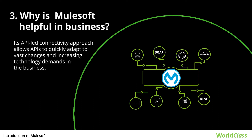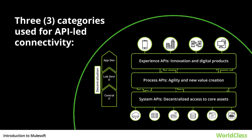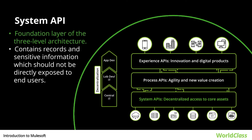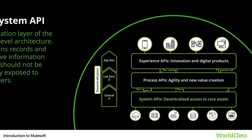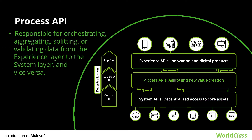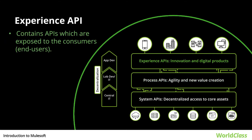MuleSoft's API-led connectivity approach allows APIs to quickly adapt to advanced changes and increasing technology demands in the business. There are three categories used for API-led connectivity: System API, Process API, and Experience API. System API is the foundation layer of the three-level architecture, which contains records and sensitive information that should not be directly exposed to end users. Process APIs are responsible for orchestrating, activating, splitting, or validating data from the experience layer to the system layer and vice versa. The Experience layer contains APIs which are exposed to consumers or end users.